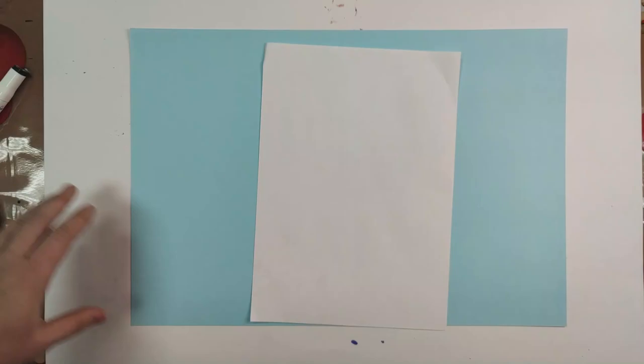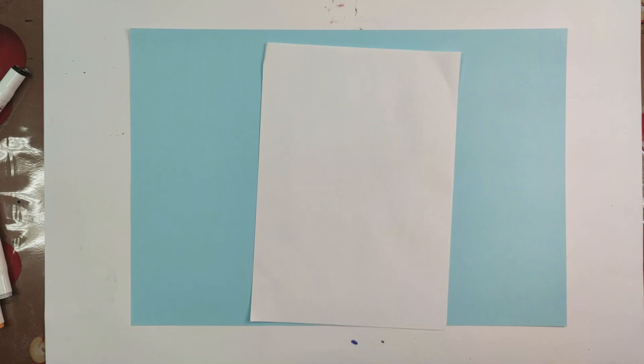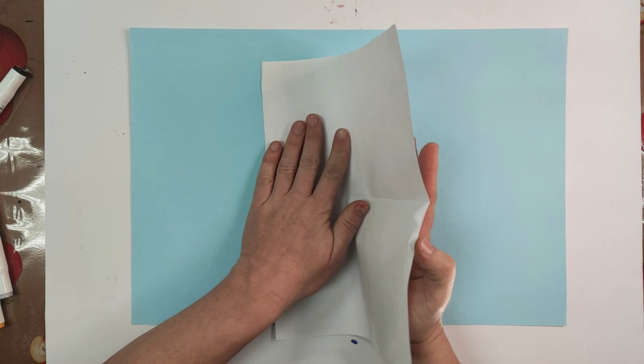To start our project, fold your paper in half in portrait format and in landscape format to find the middle of the page. With your black marker, draw a cross through the middle of the page.